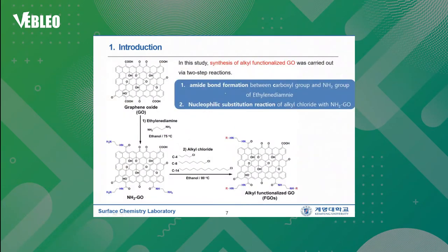In this study, we functionalized the graphene oxide (GO) with various alkyl chlorides by two-step reactions. The starting materials are GO and ethylene diamine. The first step is amide bond formation between the carboxyl group and the amine group of ethylene diamine. The second step is nucleophilic substitution reaction of alkyl chloride to aminized graphene oxide.